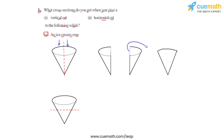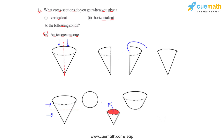If we cut the same ice cream cone horizontally, we get two parts, and the cross section represents a circle. So for an ice cream cone, a vertical cut gives a curved triangle shape, and a horizontal cut gives a circle.